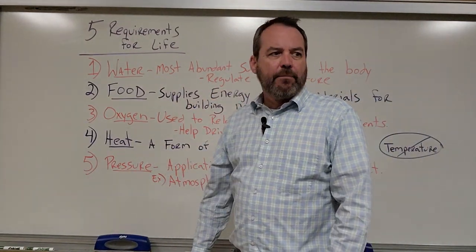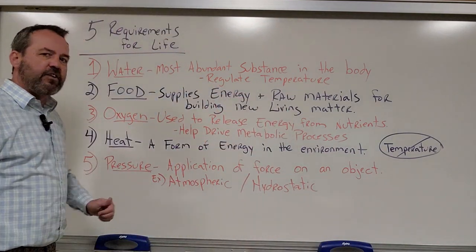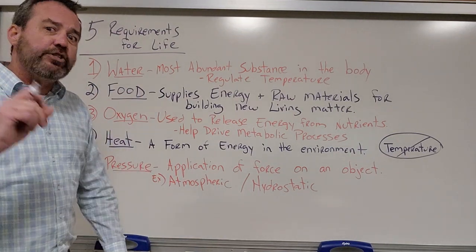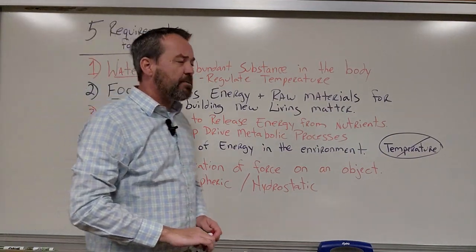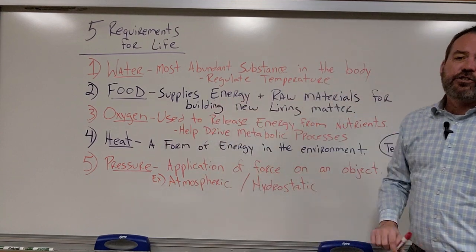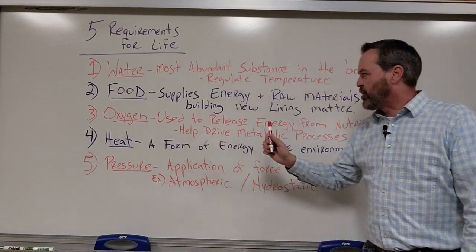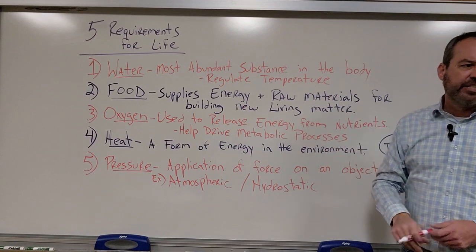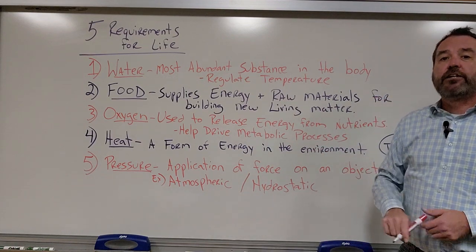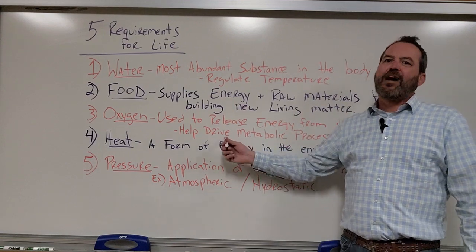So let's look at what are the requirements for life. There are five that we want to be familiar with: water, food, oxygen, heat, and pressure. Water is the most abundant substance in the body, and we use it to help regulate our body temperature. Food supplies energy and raw materials for building new living matter. Oxygen we use to release energy from our nutrients — we use it to help break down those nutrients and food particles into the molecules our body needs, specifically ATP.